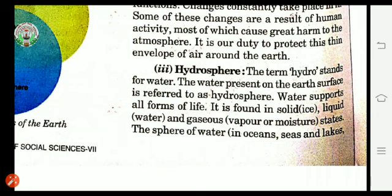Water is found in three states: first, solid — as ice; second, liquid — as water; and third, gaseous — in the form of vapor or moisture. This sphere of water, which includes oceans, seas, and lakes, covers 71 percent of the Earth's surface.